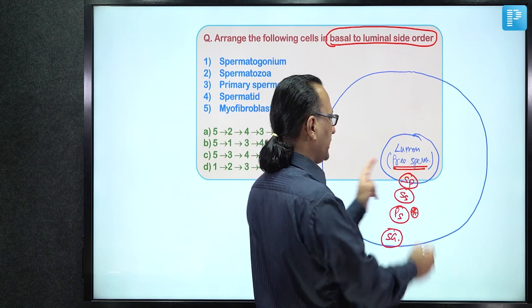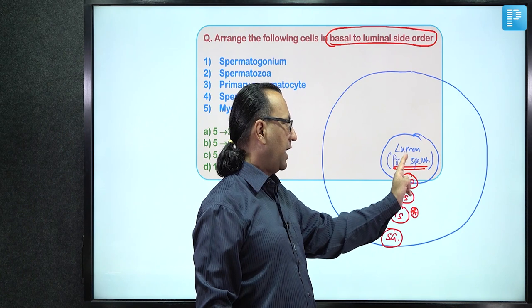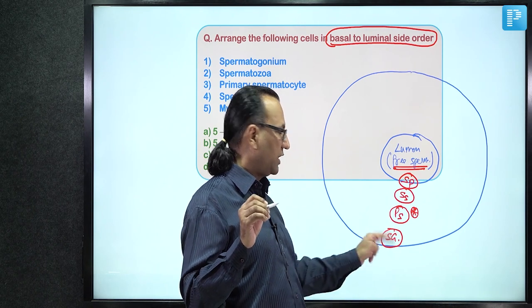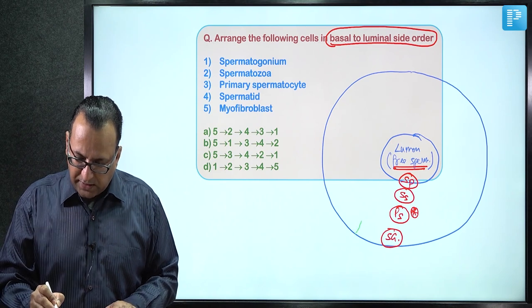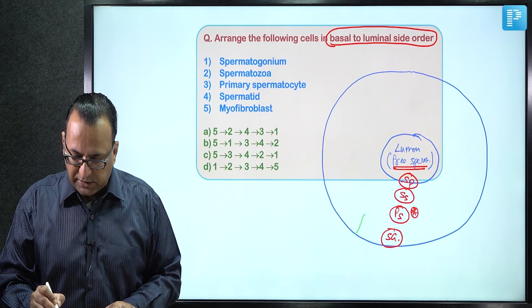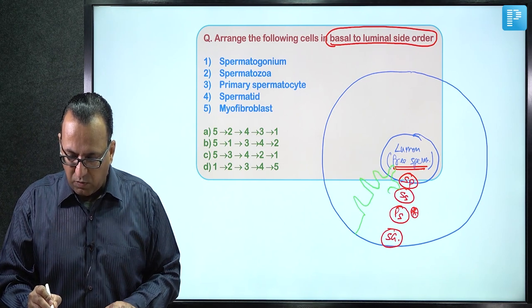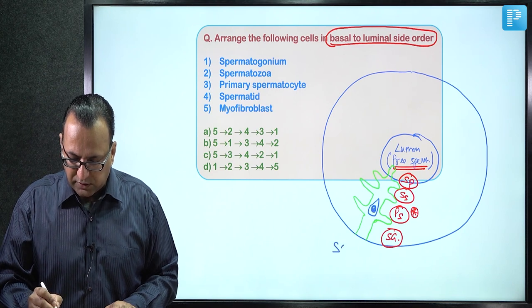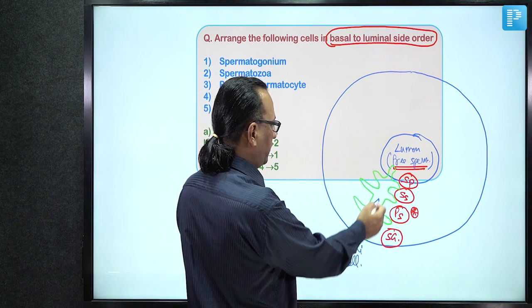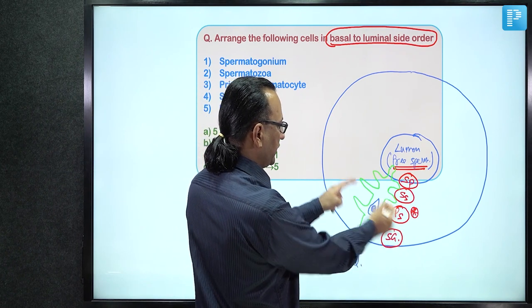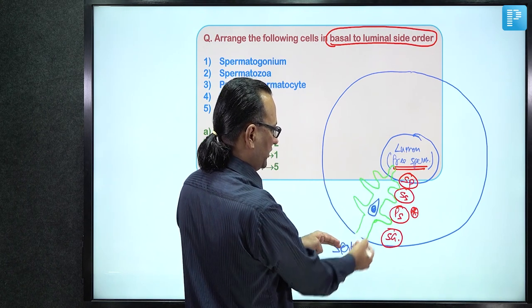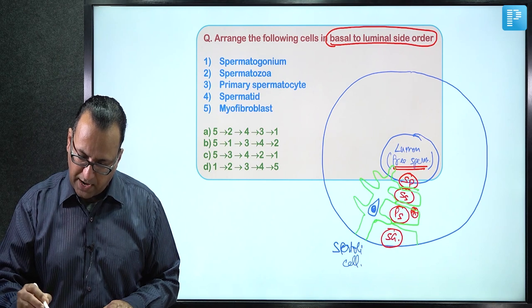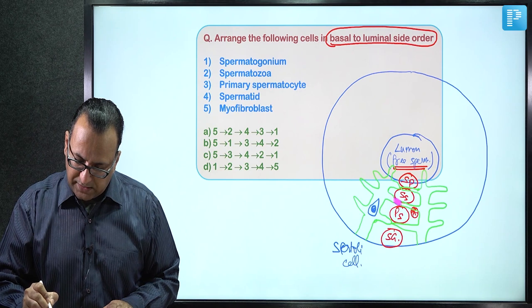Spermatozoa are free in the lumen — not part of the epithelium — with a very small condensed nucleus and a tail. The supporting cell is the Sertoli cell: a large columnar cell with multiple interdigitating processes, traversing from basal to luminal side, with a large nucleus and prominent nucleolus.